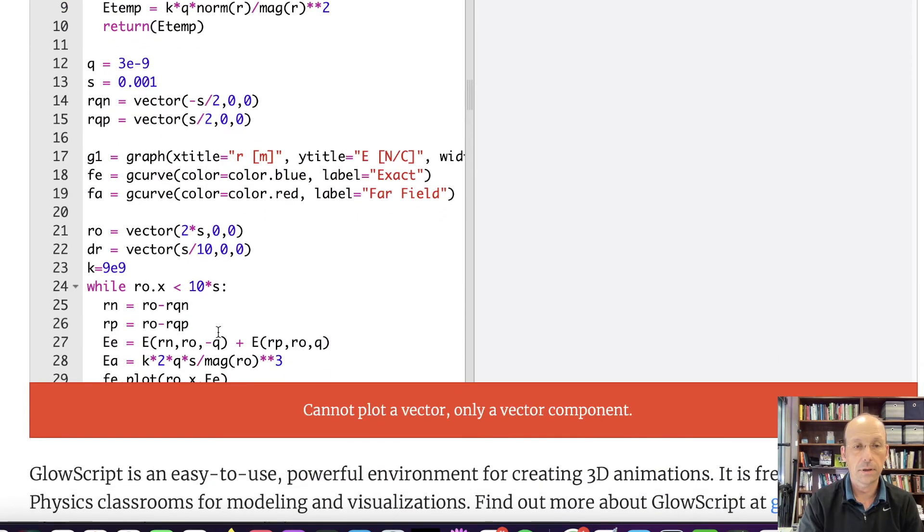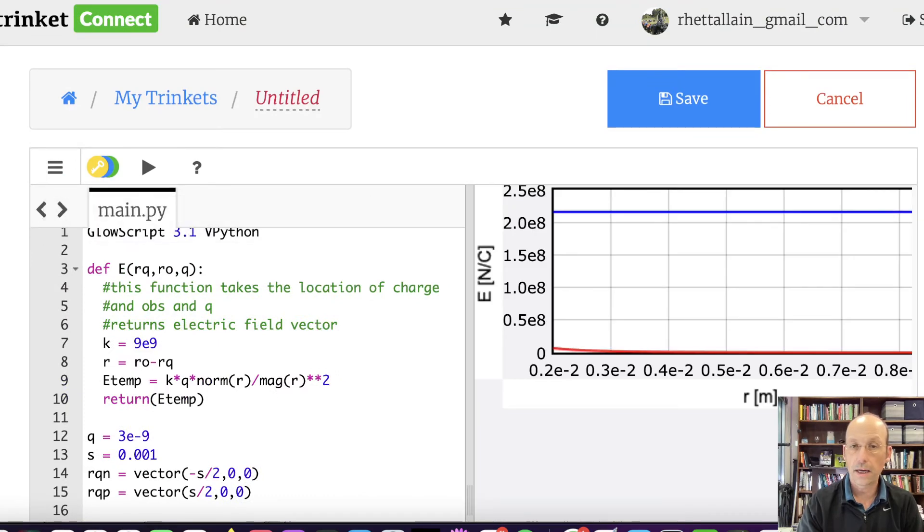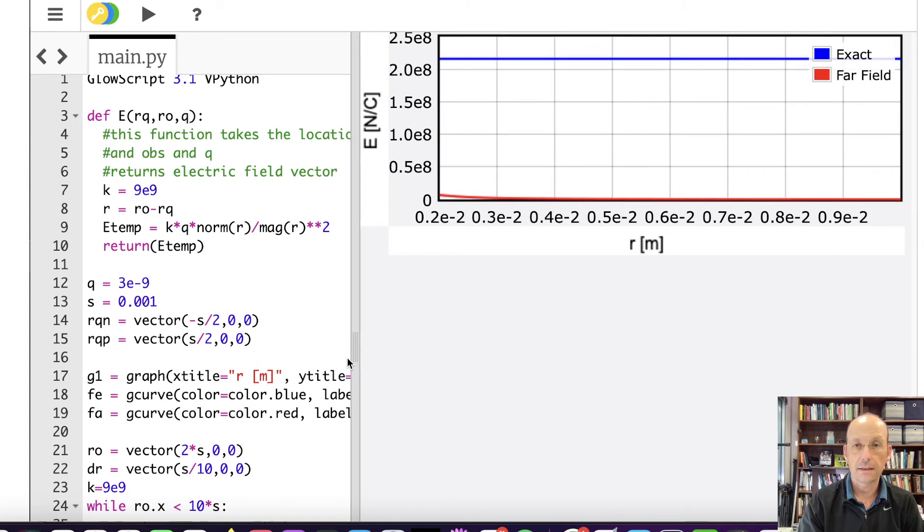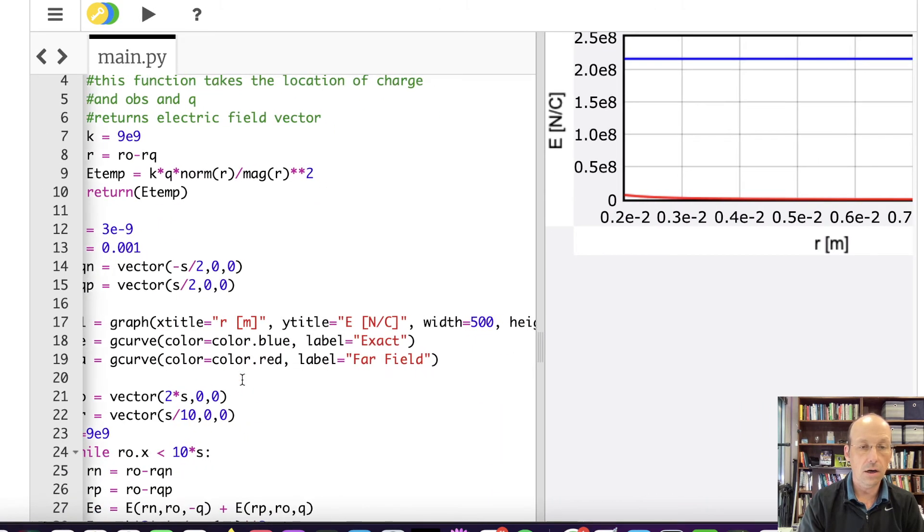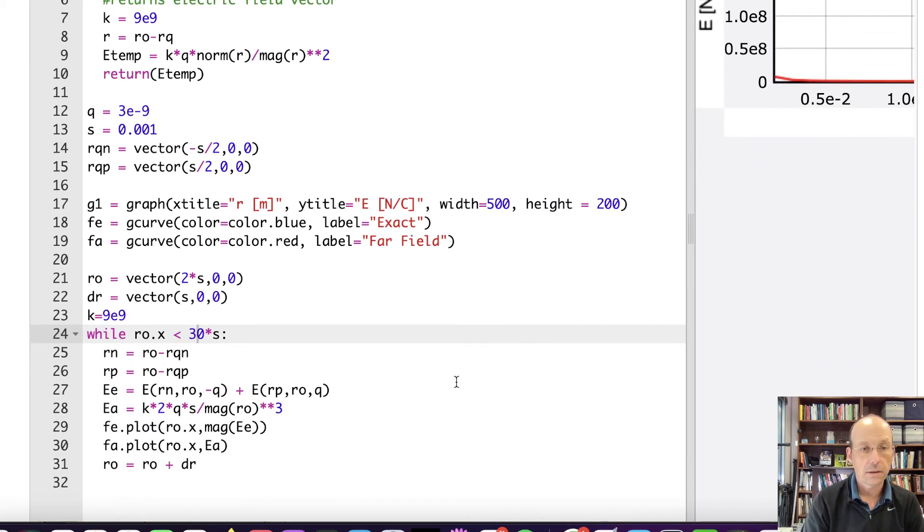Nothing. Cannot plot. Aha, so I was plotting the electric field which I can't. So let's plot the magnitude of the electric field, mag. That one is a scalar. Okay, so something weird happened. That's not what I expected. The exact and the far field are not the same. Maybe I'm not far enough away. Let's do this. Let's say my DR is going to just be S and let's go to 50, 30. Something weird is happening. The exact is not changing.